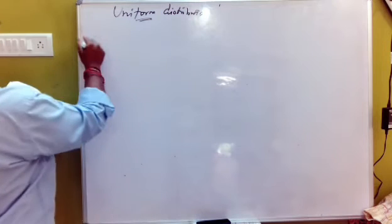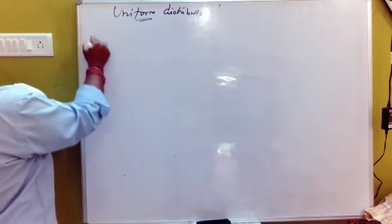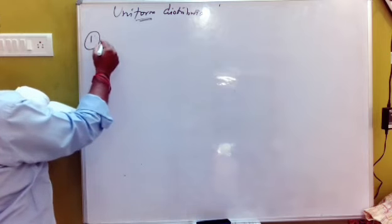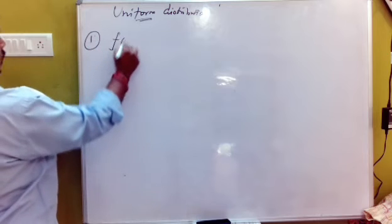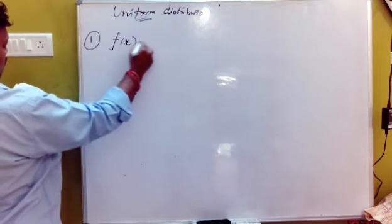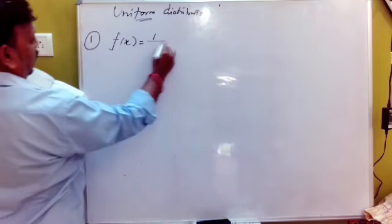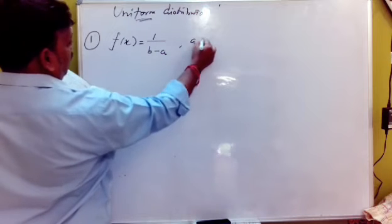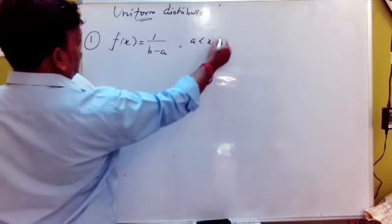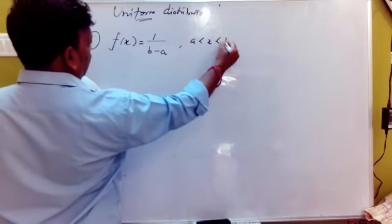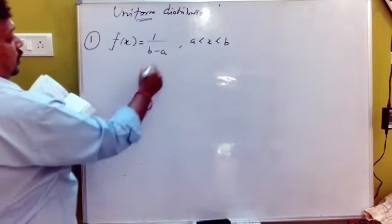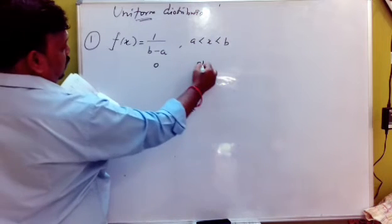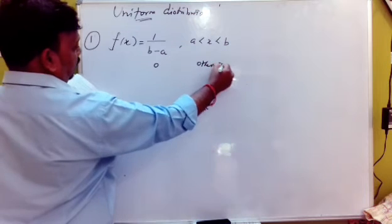The formula for the uniform distribution PDF is 1 by (b minus a), for a less than x less than b. So this is the probability density function — the PDF of the uniform distribution.